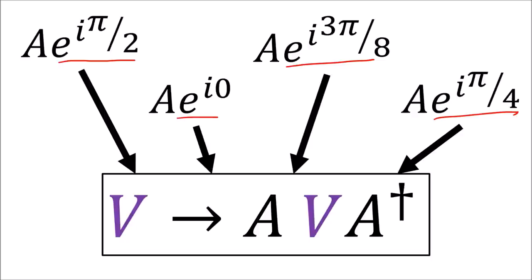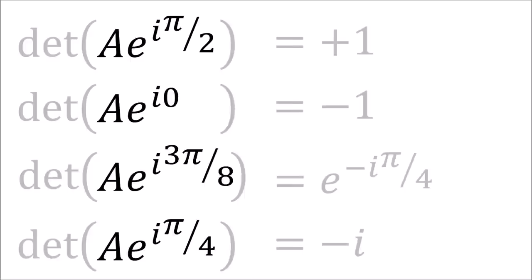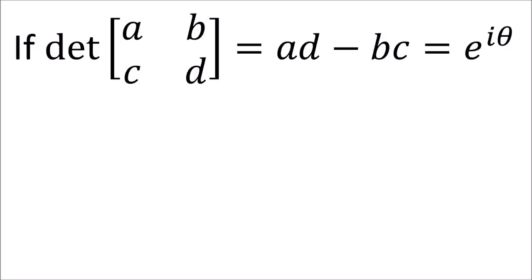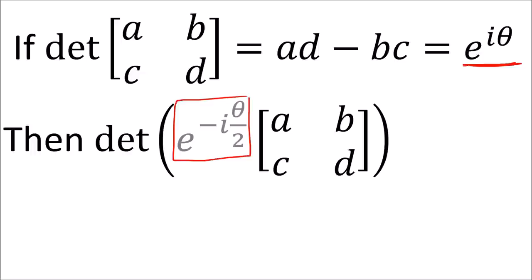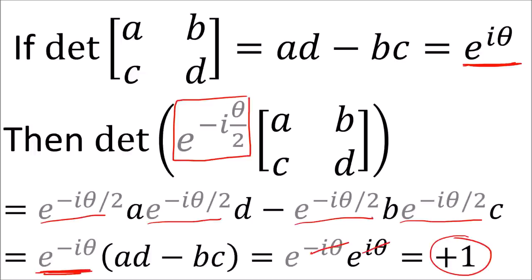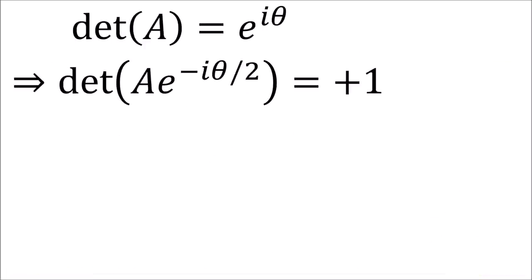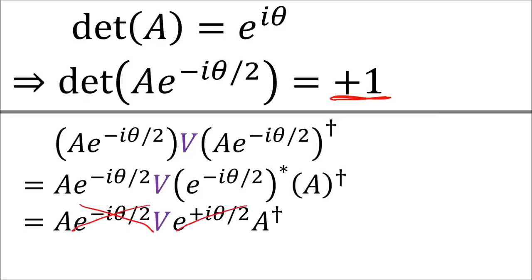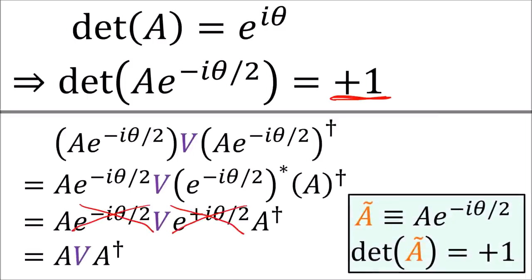This means that there are multiple A matrices that lead to the same transformation, all related by different phase factors—so there is a redundancy in the A matrices for doing rotations. We can pick out a specific A matrix by picking the one whose determinant is equal to 1. If A has a determinant of e^(i theta), we can always force its determinant to be 1 by multiplying by a phase of e^(-i theta/2). This phase will have no impact on the transformation due to phase cancellation, so by eliminating the redundancy, we can say that A has a determinant of positive 1.